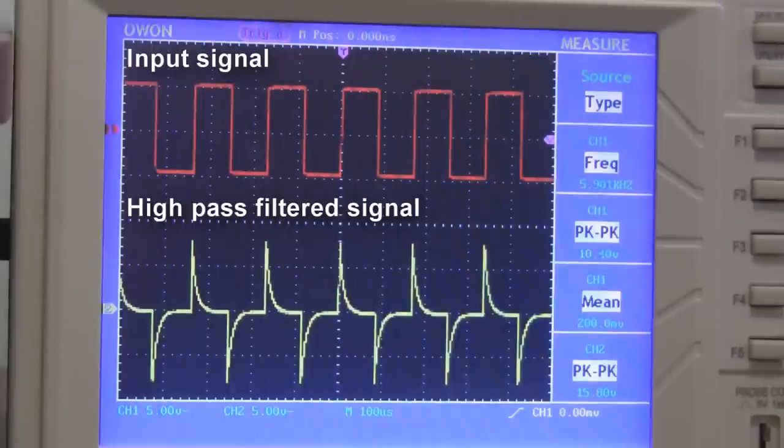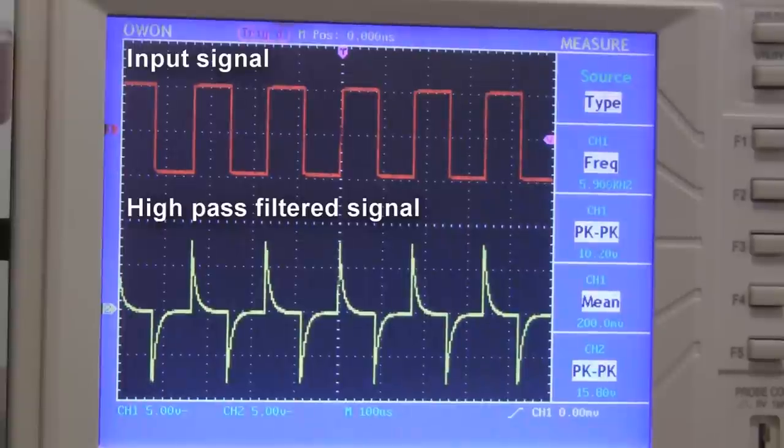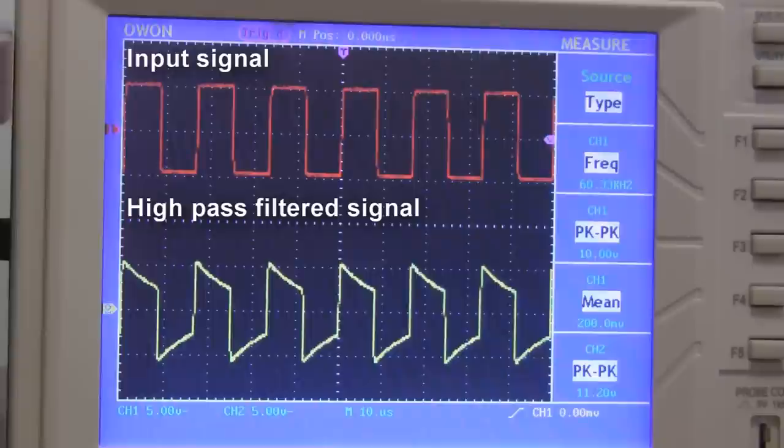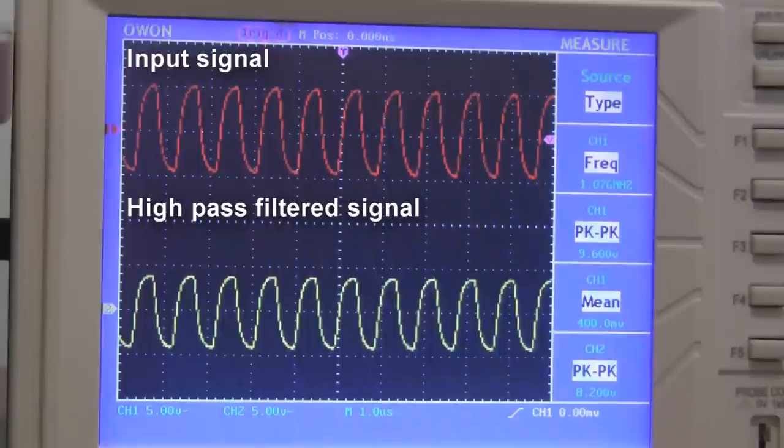If we crank the frequency up to 6 kHz, a little more of the original wave shape gets through. At twice the cutoff frequency, we get a waveform like this. And at 1 MHz, almost everything gets through.